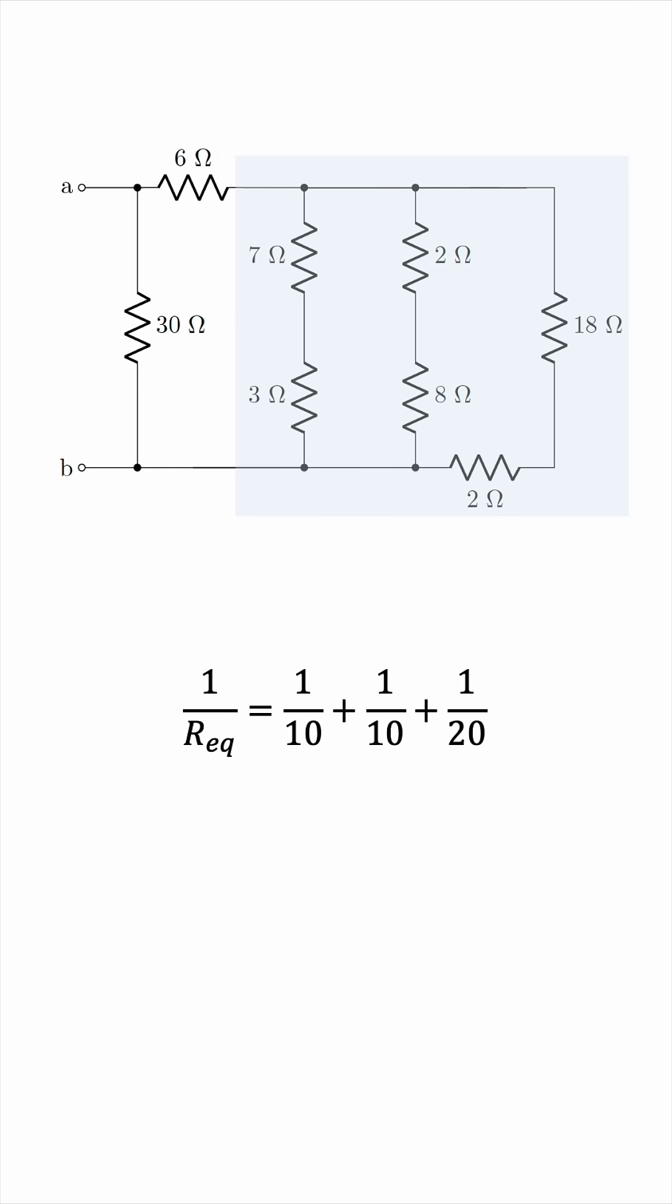We can make the denominators the same, and then this becomes 5 over 20. So the equivalent resistance is 20 over 5, or 4 ohms. This big block can be replaced by a 4 ohm resistor.